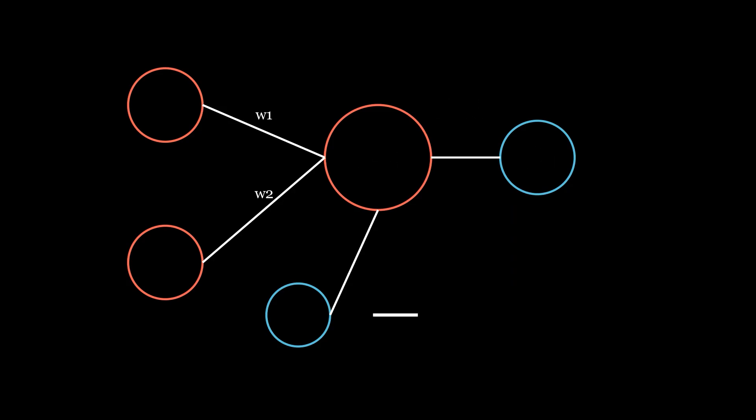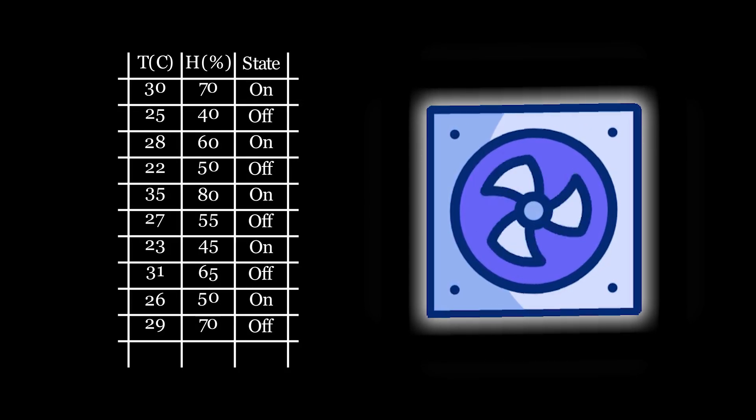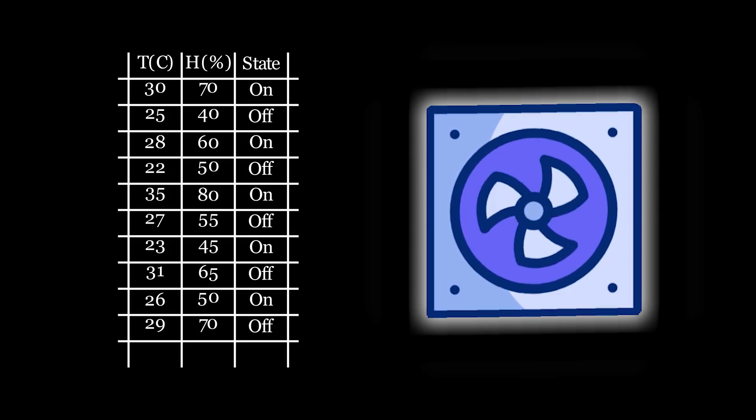And here we have our activation function. Now let's look at this element. It is called the bias. You'll see its use later when we start to train our neural network. Now let's choose data for our neural network to train on. I want my model to control my AC unit based on temperature and humidity outside.